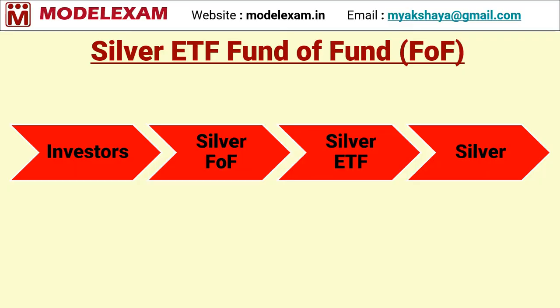Silver ETF Fund of Fund. As we have seen, a DMAT account is compulsory for investing in silver ETF. If an investor does not have a DMAT account, the other option available is the Fund of Fund route. Investors will invest in silver Fund of Fund, which holds a DMAT account and in turn invests in silver ETF, which then invests in silver.